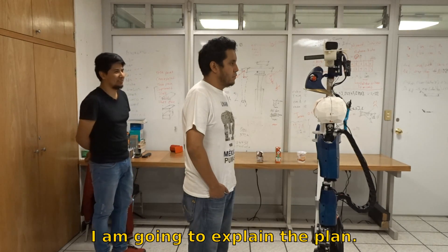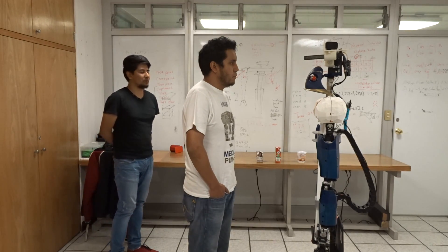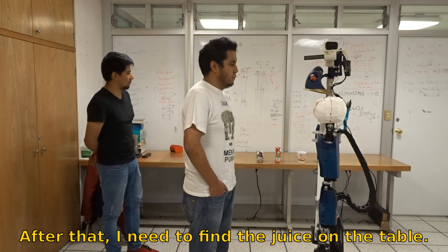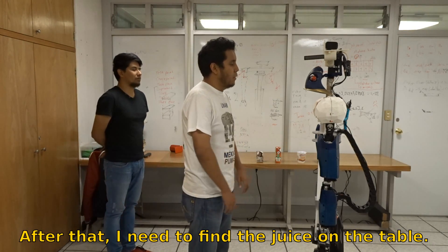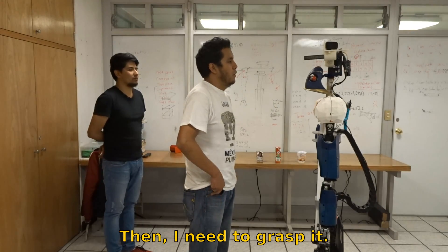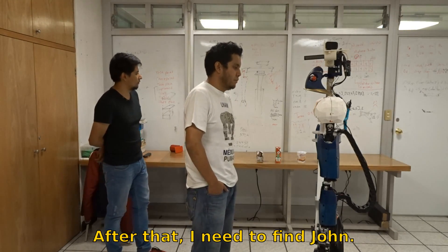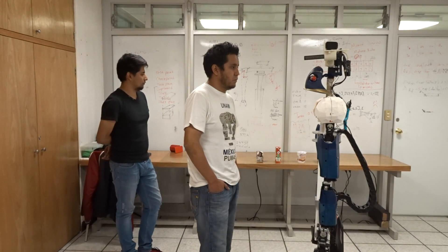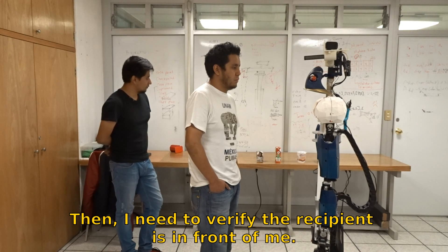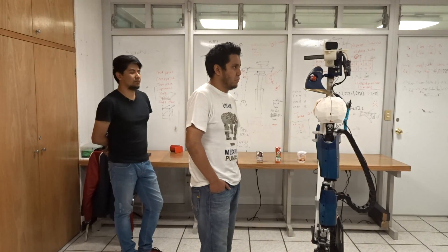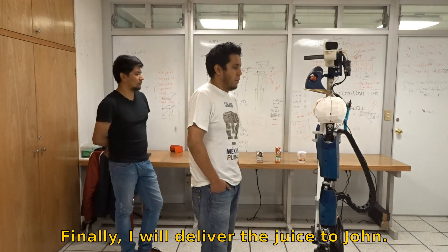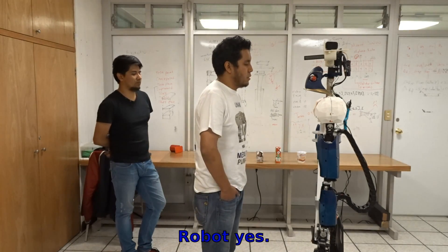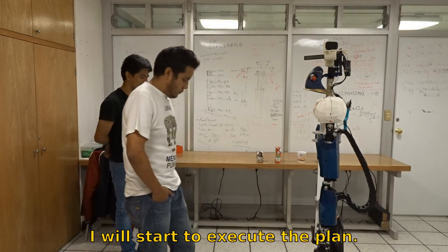I am going to explain the plan. First, I need to align myself to the table. After that, I need to find the juice on the table. Then, I need to grasp it. After that, I need to find John. And I will approach myself to him. Then, I need to verify that the recipient is in front of me. Finally, I will deliver the juice to John. Do you want me to start to execute the plan? Robot, yes. I will start to execute the plan.